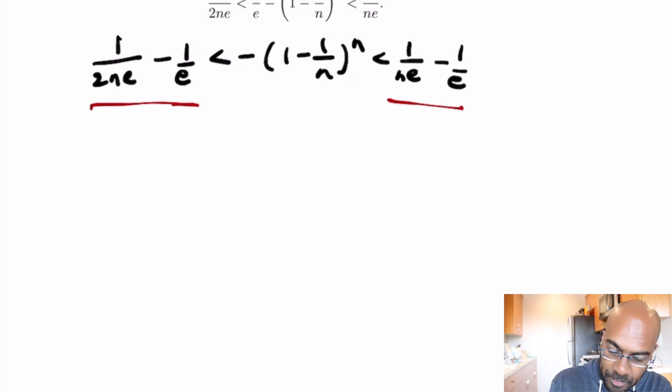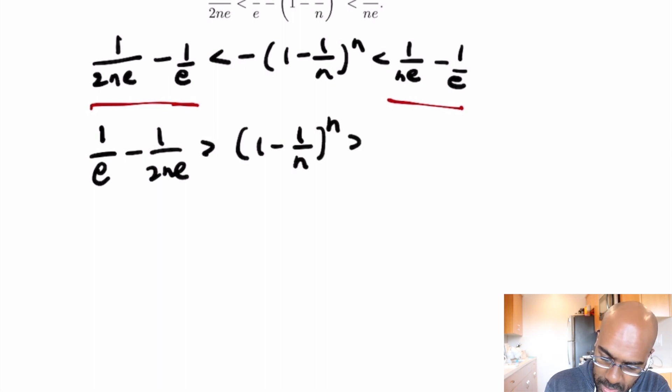So it makes sense to multiply by negative 1. Our equivalent inequality is going to look like this being greater than 1 over 1 minus 1 over n to the n being greater than 1 minus 1 over n, and then we have these e's on the bottom.